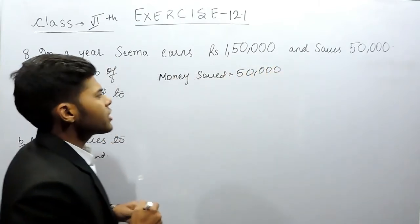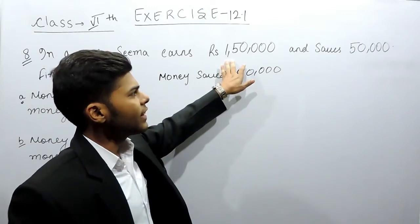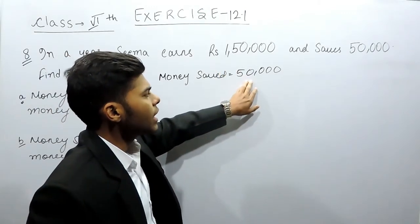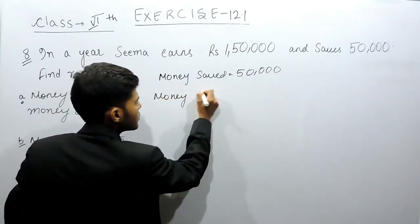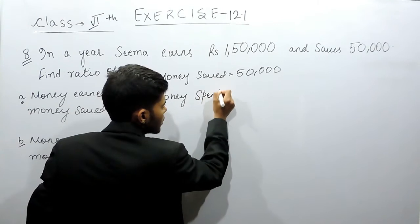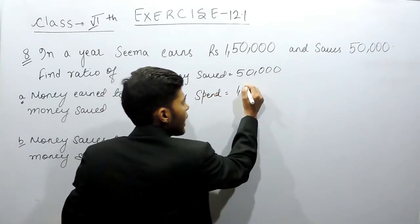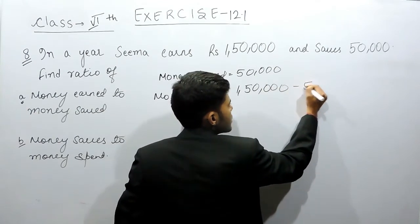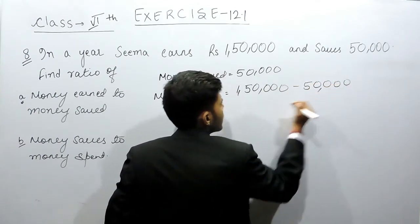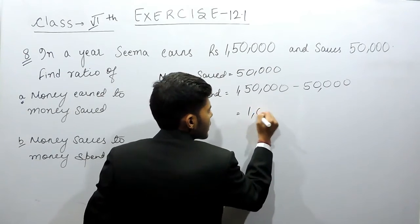Now if she earns a total amount of Rs 1,50,000 and she saves Rs 50,000, that means that money spent will be equal to 1,50,000 minus 50,000, that will be equal to Rs 1,00,000.